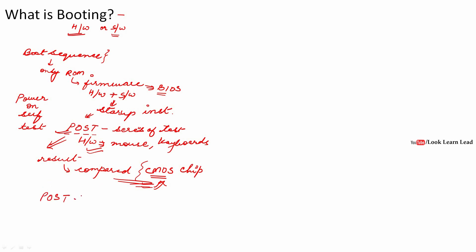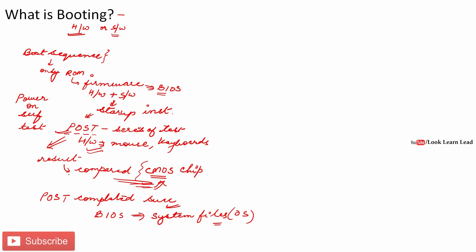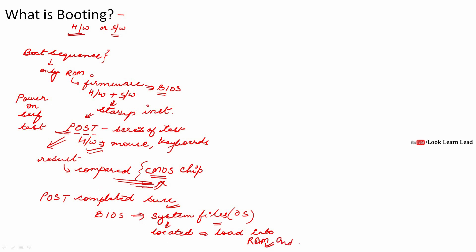Once the Power On Self Test is completed successfully, the BIOS — the firmware — will search for the system files, that is, it will search for the operating system. Once the system file is located, whether it's in the C drive or D drive, the BIOS loads it into the main memory, that is, into RAM. Once loaded, it executes, and the OS takes control of the system.